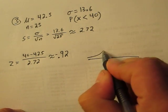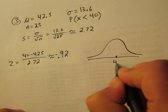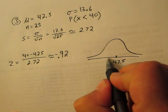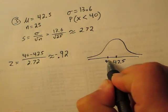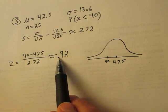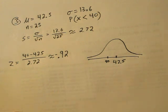So a quick little sketch here. Our true mean is 42.5. We're trying to find the probability that a sample of 25 would have a mean that is less than 40. And 40 would be about right here. I know it's about right here because it's about one standard deviation to the left of the mean. The negative means it's to the left and 0.92 is close to the number 1.